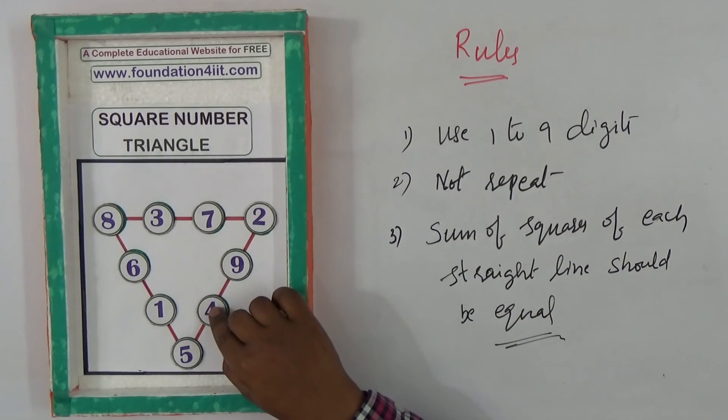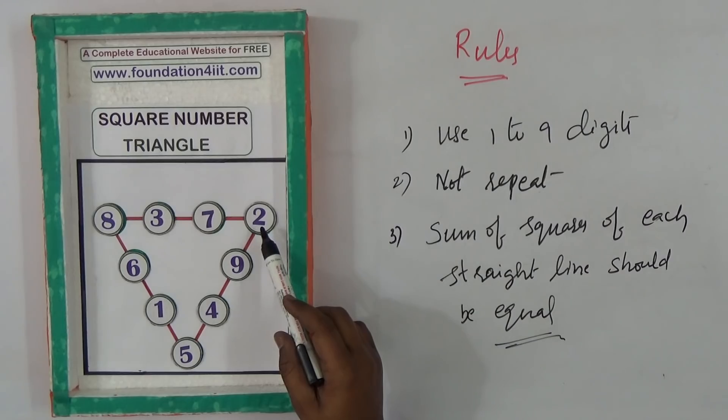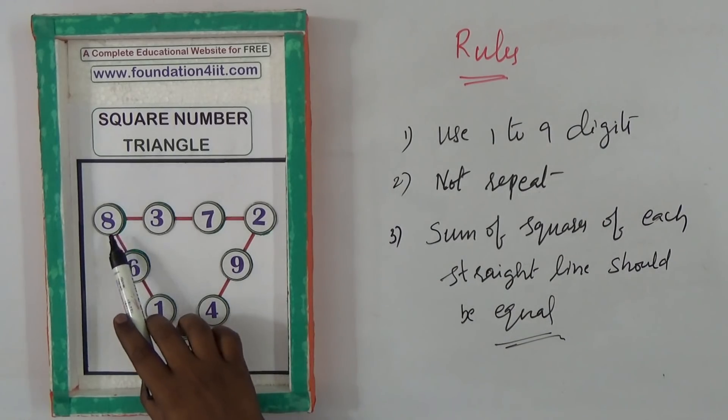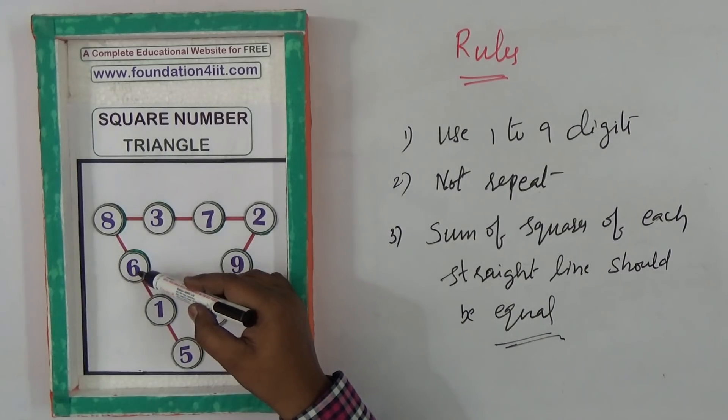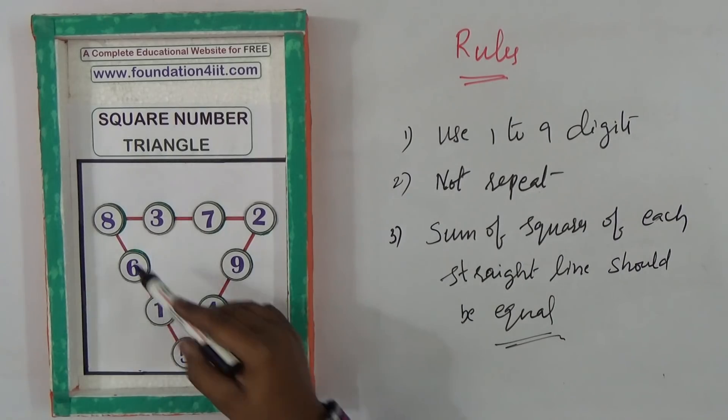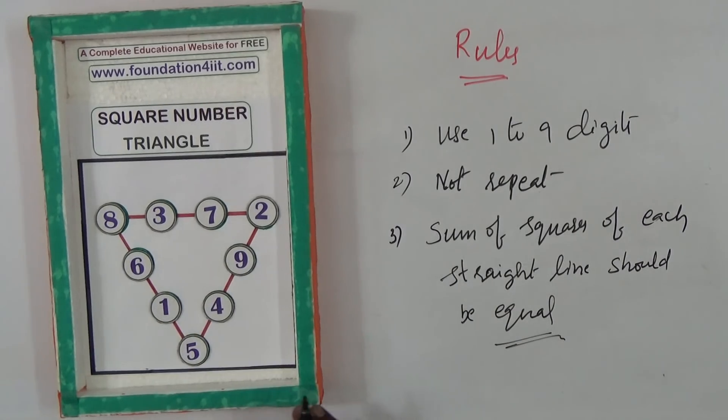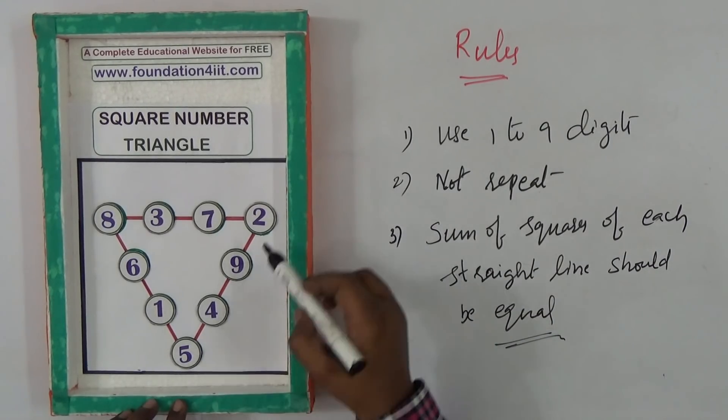Here the sum of squares of the numbers are same. Five plus four is nine, nine plus nine is eighteen, eighteen plus two is twenty. Eight plus three plus seven plus two also twenty. Eight plus six is fourteen, seven plus five is twelve, twenty. One more specialty in this is sum of the squares of every straight line.